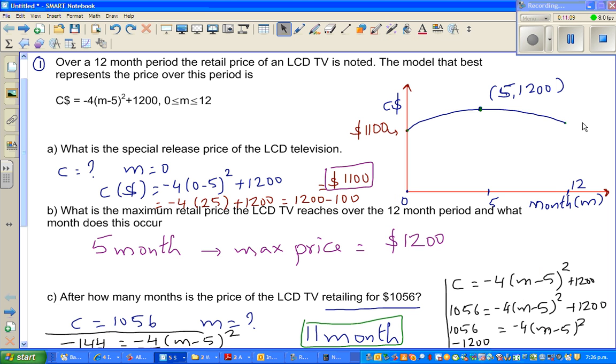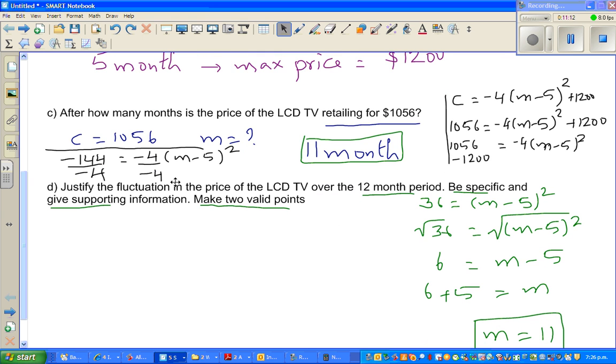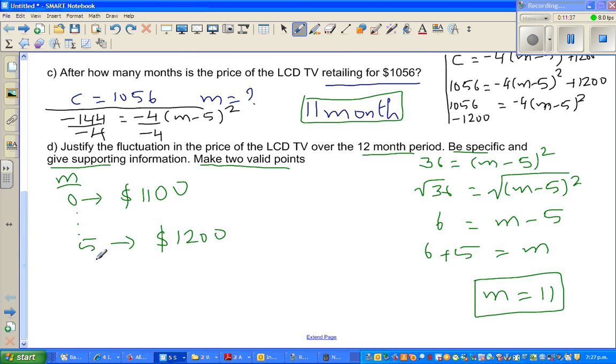So what can be the math behind it? What's the reason of fluctuation? When M is zero, it started at 1100. After five months, the price peaked to 1200. Then it started going down. When it was 12 months, the price is 1004.